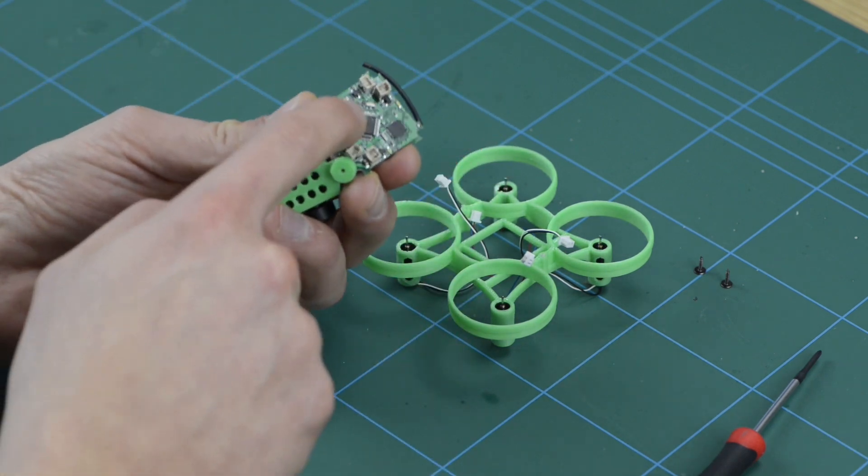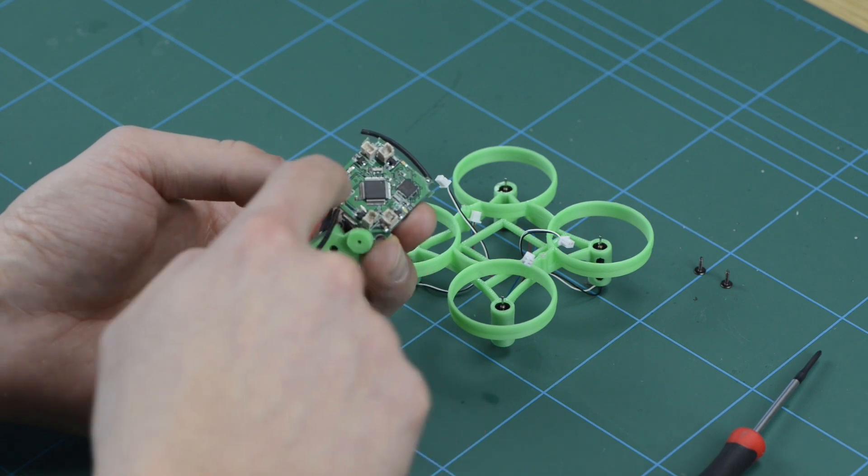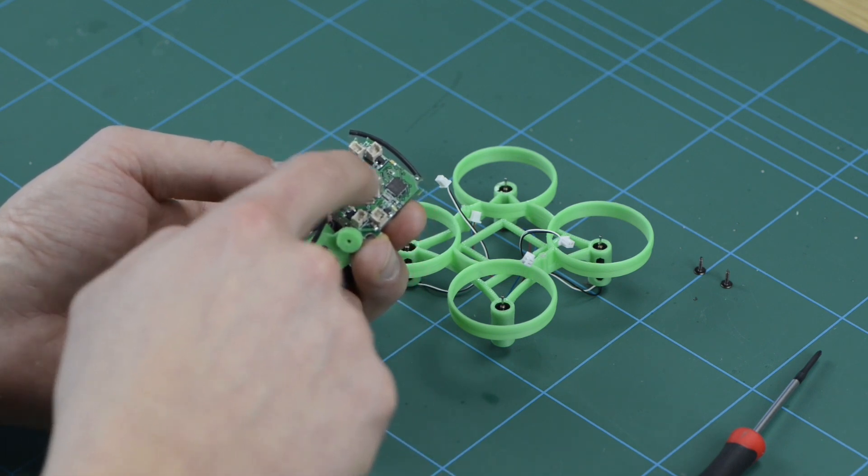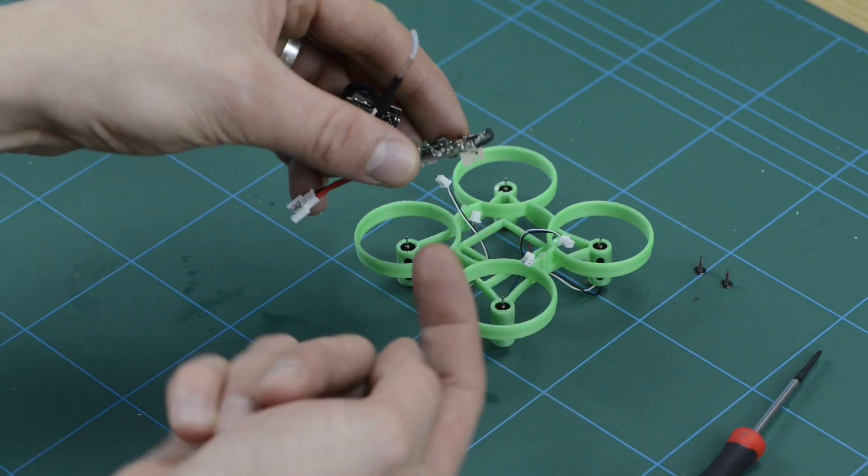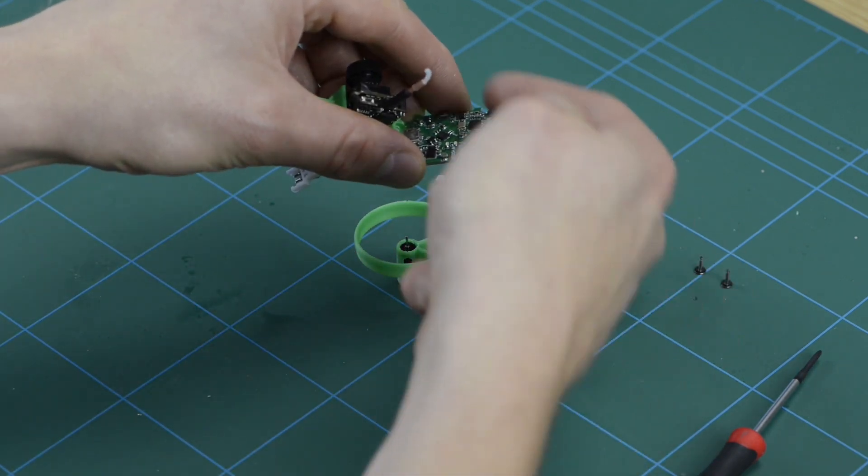And they go into the corresponding port on the flight controller. So you won't be able to see this probably in the video, but if you look closely at your board, you can see they're labeled M1, M2, M3 and M4. And this motor goes into the connector that's nearest to it and so on.